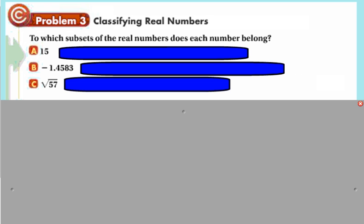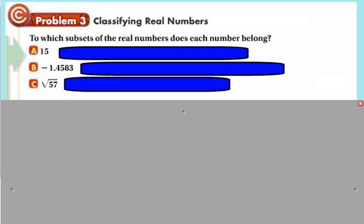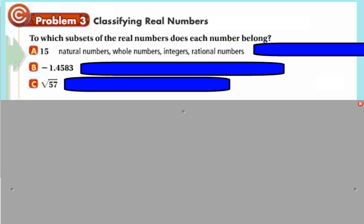So a couple examples real quick. To which subsets of the real numbers does each number belong? So 15. If you look back, 15 is just a counting number. It would be a natural number, but it also is part of the whole number. It's also part of the integers number. It's also part of the rational number. So I think it works for all of those. Natural numbers, whole numbers, integers, rational numbers, all of those it fits into.